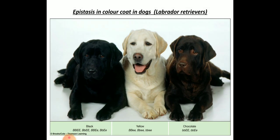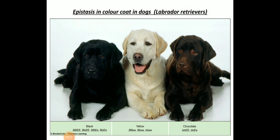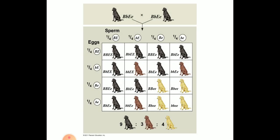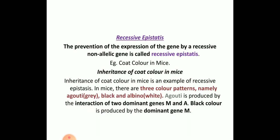One more example for dominant epistasis is coat color in dogs. Labrador dogs can be black, white or yellowish, and chocolate in color. The same example can be given for dominant epistasis. Make a note on dominant epistasis.